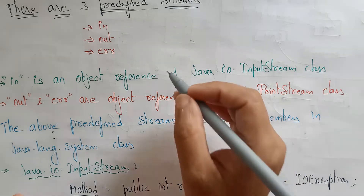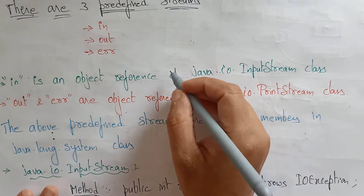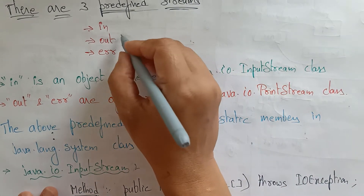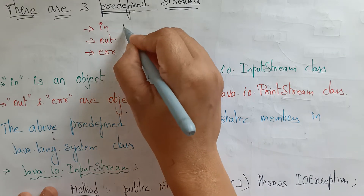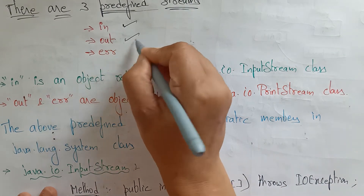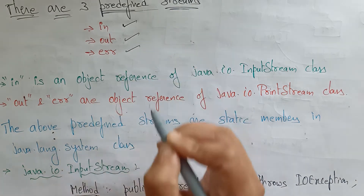There are three predefined streams that are present in the Java programming language: in, out, and error.